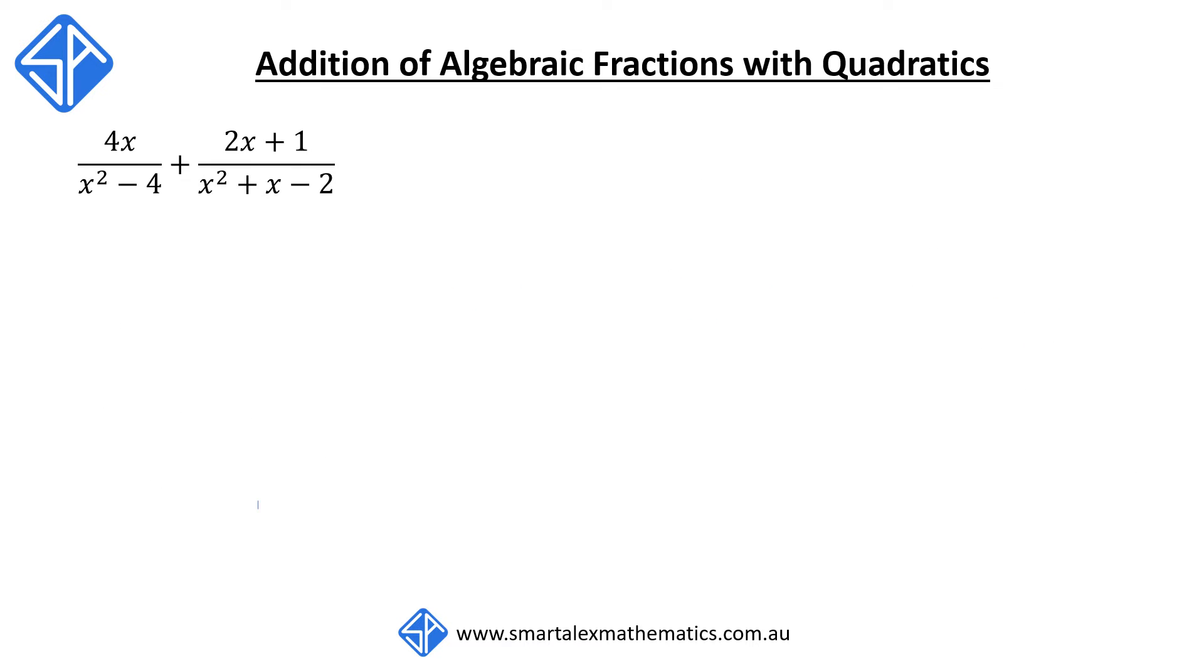Now that we've factorized both denominators, we can rewrite the original expression in factorized form as follows. Our next step is to find a common denominator. Since our first fraction has got x plus 2 and x minus 2, and our second fraction has got x plus 2 and x minus 1 on the denominator, we're going to have x plus 2 times x minus 2 times x minus 1 as our common denominator.